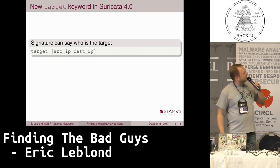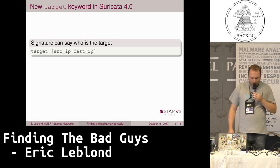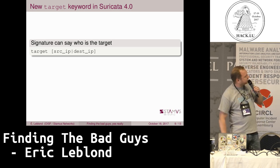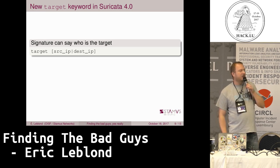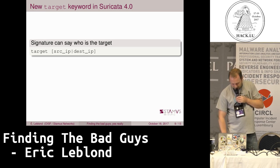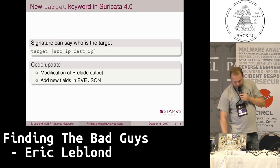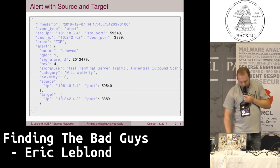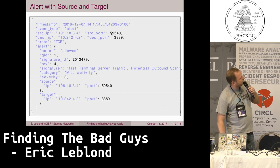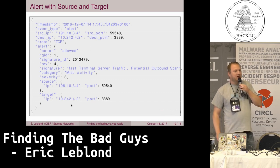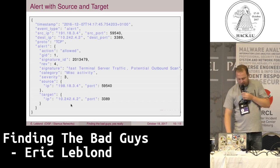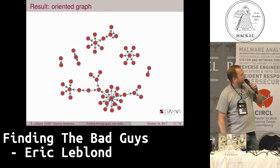So I introduced in Suricata 4.0 a keyword named 'target', which allows you to say that the target of an attack is the source or destination in the alert. I updated the code, fixed the Prelude output, and extended the JSON output. Now in the JSON output, if you have a signature with the target keyword, you get inside the alert object the source IP and the target IP. You can use this value to build the graph we wanted.